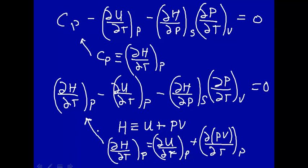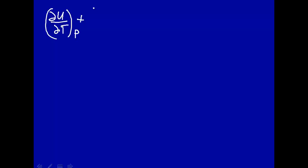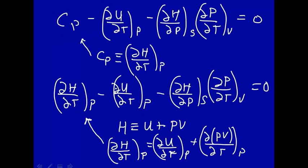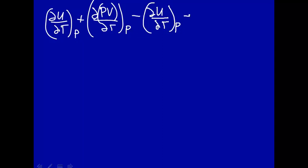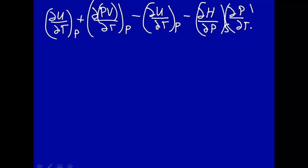Let's plug that in. We substitute and end up with how U changes with temperature at constant pressure, plus how PV changes with temperature at constant pressure, and then the rest of that equation. Look at what happens — how U changes with temperature at constant pressure cancels out, leaving minus how H changes with pressure at constant entropy times how P changes with T at constant volume, equal to zero.